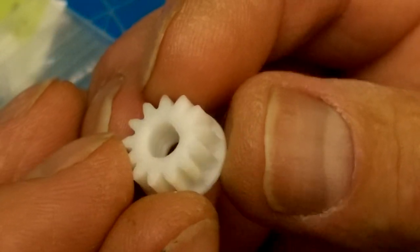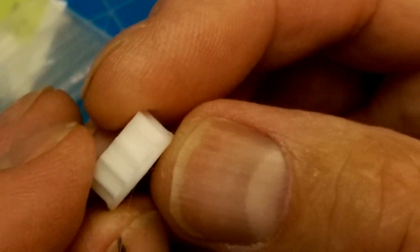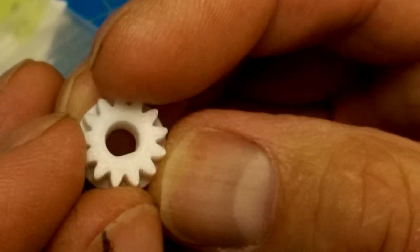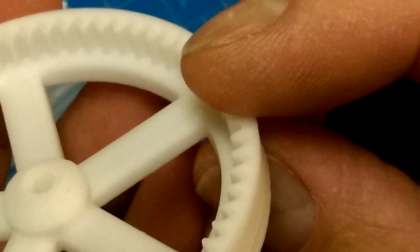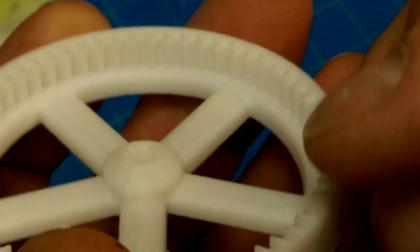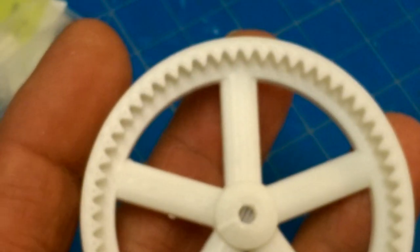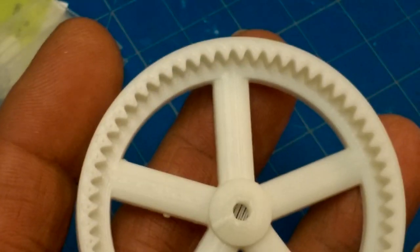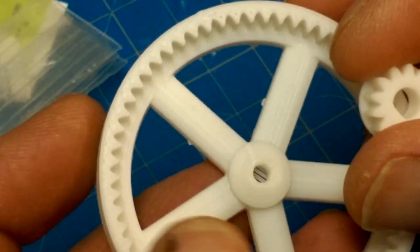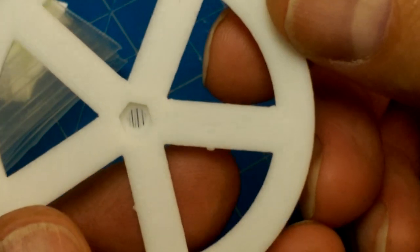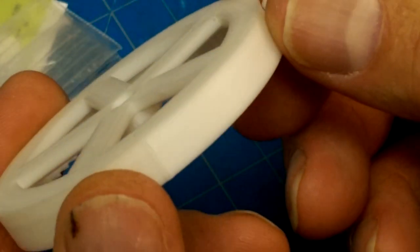So that's the Creality Ender 3 printing a gear that's maybe three millimeters in height, maybe four. And that's the mating piece, that's the inside. I mean, it looks pretty good. So I'm going to assemble an extruder out of these pieces. And we'll see how that goes. Yeah, not too bad.